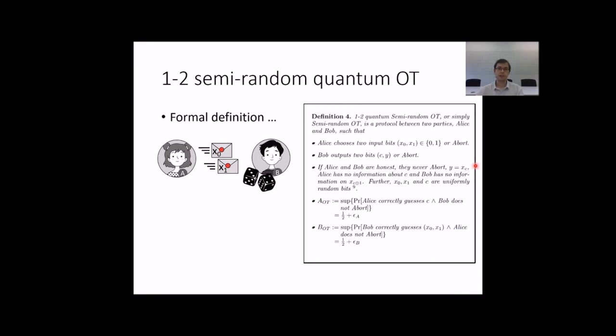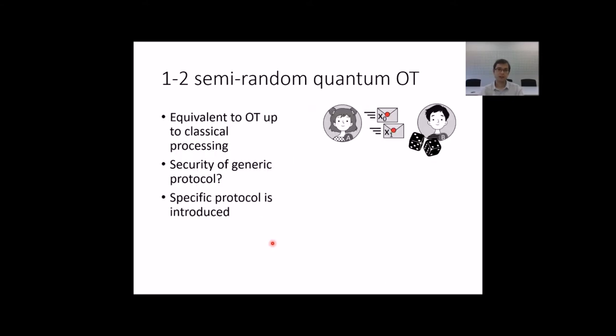Let me introduce a variant of OT. It is like the previous case with one difference. The receiver, Bob, no longer chooses which bit he is going to learn. In other words, the choice of his bit, C, is done randomly.